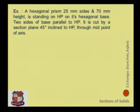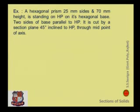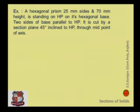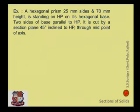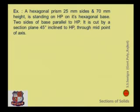The first example: a hexagonal prism with 25 mm sides and 70 mm height is standing on a horizontal plane on its hexagonal base, with two sides of the base parallel to the horizontal plane. It is cut by a section plane inclined at 45 degrees to the horizontal plane through the midpoint of the axis. Draw its front view, top view, and true shape of the section. From the data, the top view would be hexagonal with 25 mm sides, and two sides of the base are parallel to the horizontal plane.